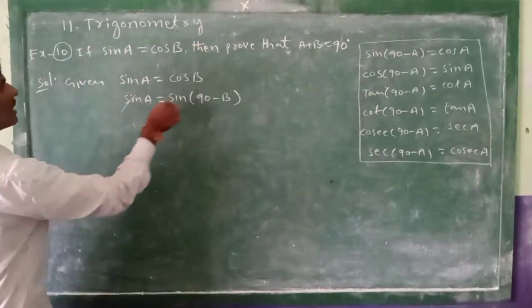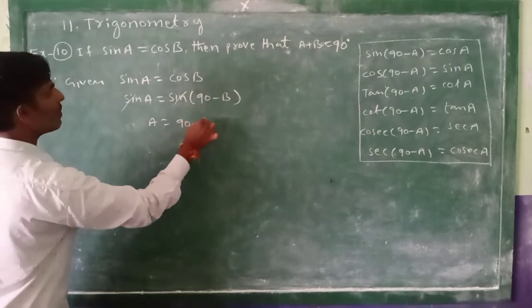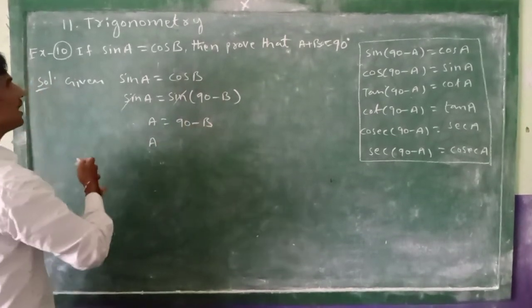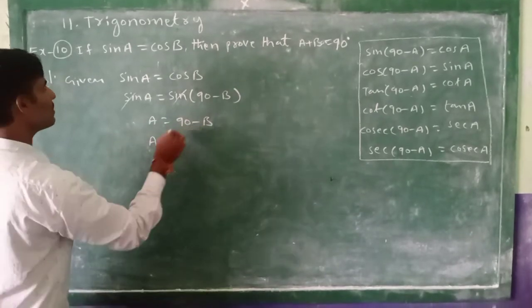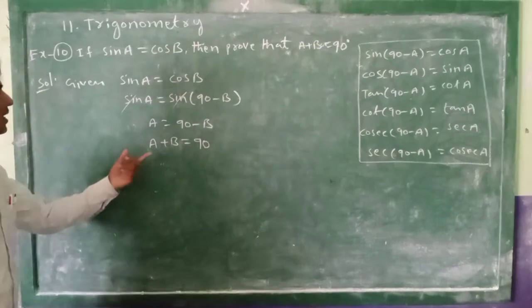Now see, sine sine will cancel here. A equal to 90 minus B. So A as you write, minus B is there now. Here minus B becomes plus B equal to 90. And so we got A plus B equal to 90.